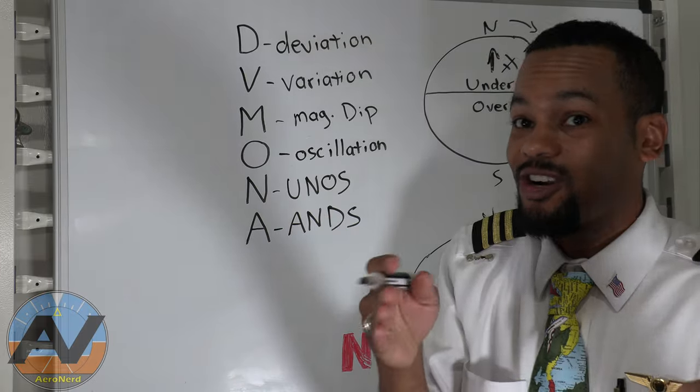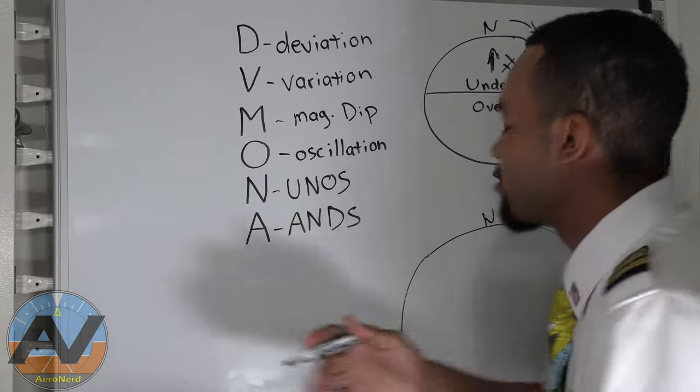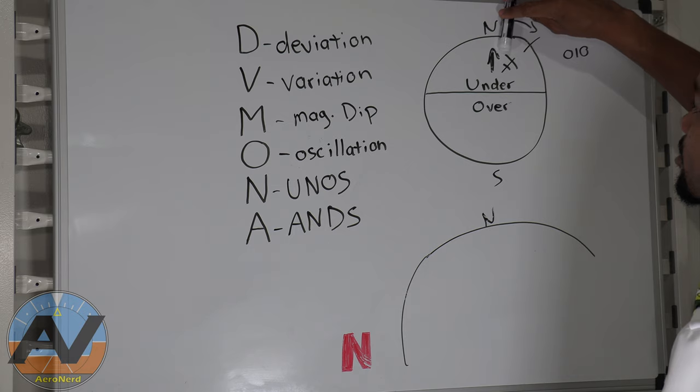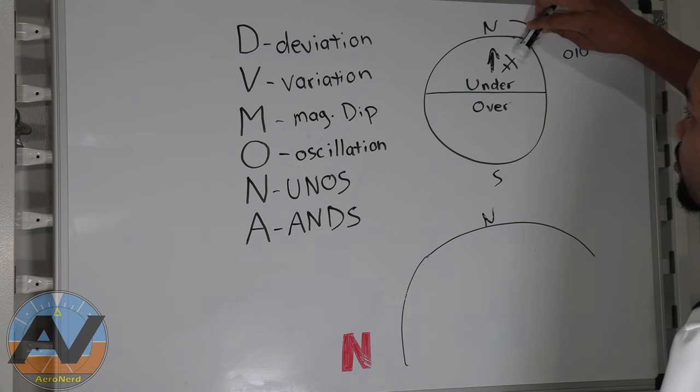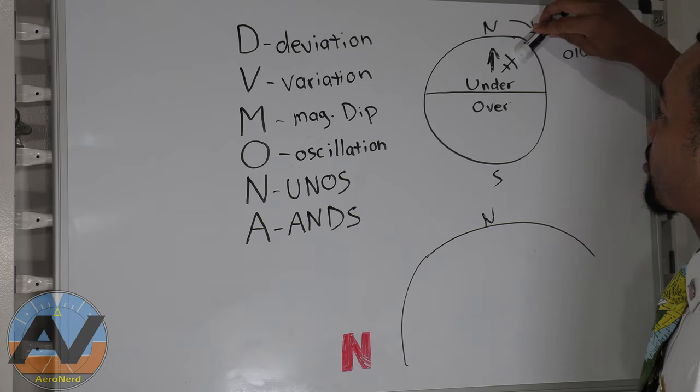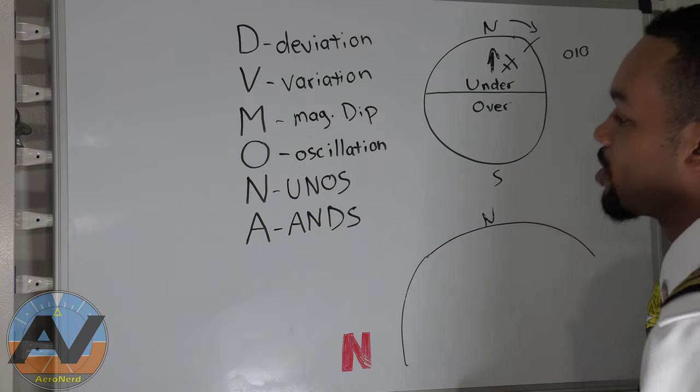So that's why when the compass says 010, you are undershooting, you are at 030. That's what you want to fly to, but you're going to undershoot and you're going to level out at heading 010. So when it's indicating 010, it's still not finished turning. It has to catch up to you because it moves at a slower rate than the aircraft is turning. And vice versa when you're South. So that's why it says undershoot North, overshoot South.